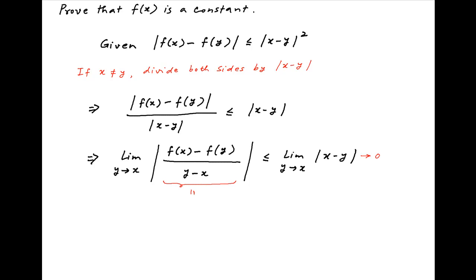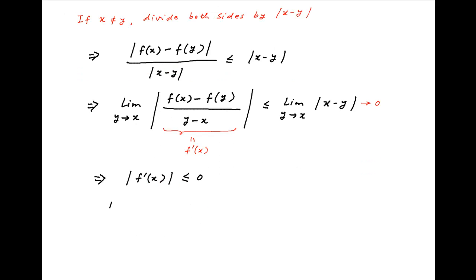On the left-hand side, the limit of the expression under the absolute sign is equal to f'(x). Therefore it follows that the absolute value of f'(x) is less than or equal to 0.